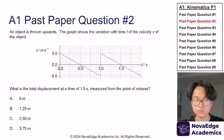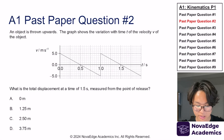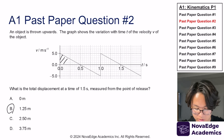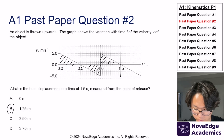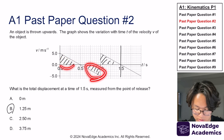Now let's try topic A1, paper 1, past paper question 2. It's asking for total displacement on a velocity-time graph. If you answered B, then you are absolutely right. Displacement is represented by the area under the curve, and we only want up until 1.5 seconds. We also see that these two areas cancel out because one is negative and one is positive.